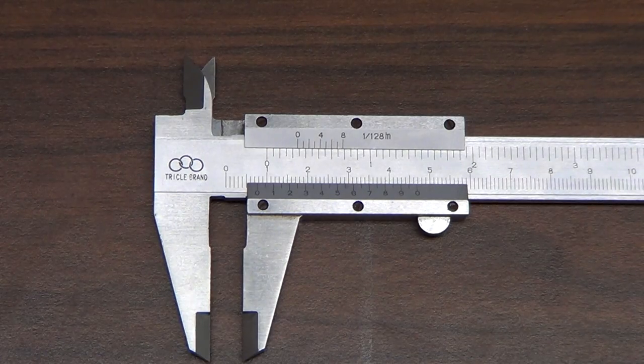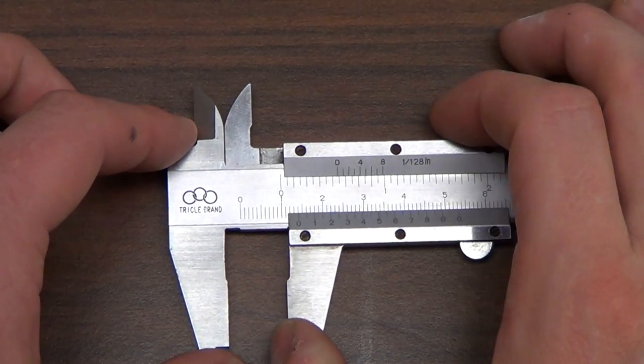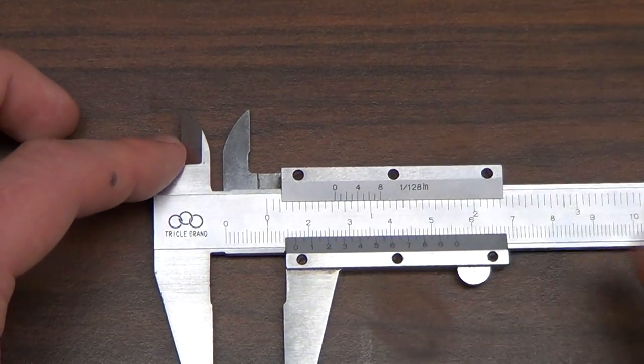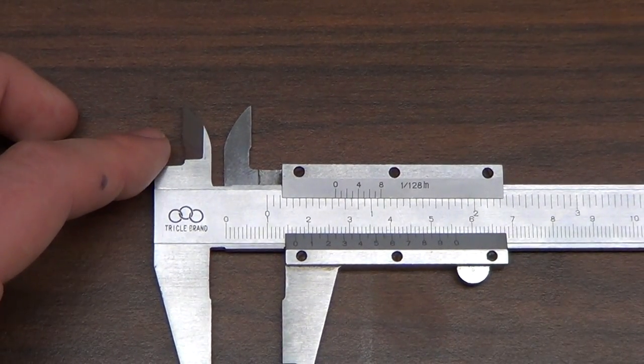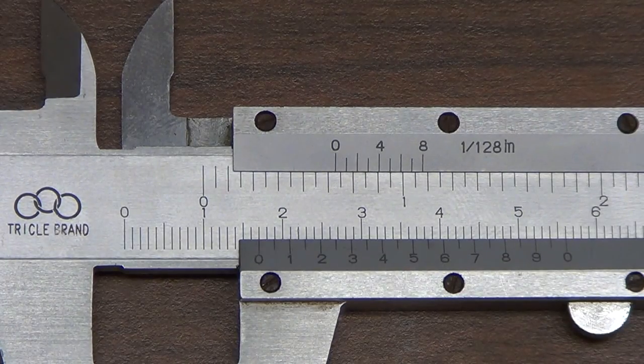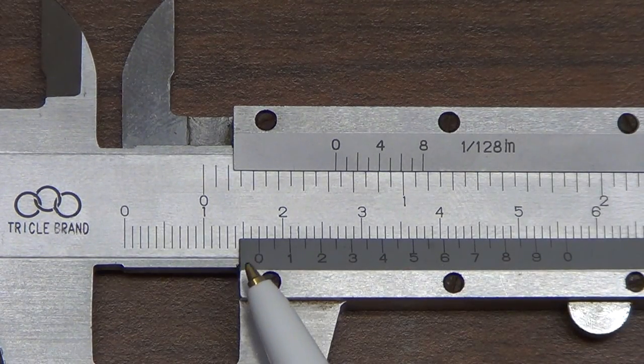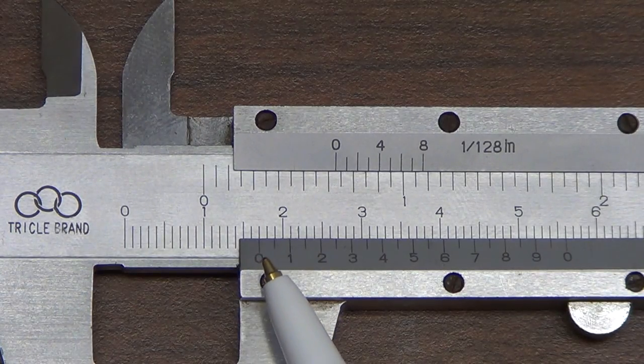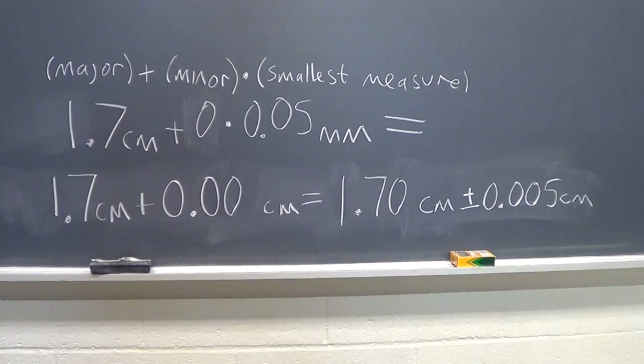Now as an example of what happens if our scale is slightly different, if we're using a different measure, and we come upon the case where the zero on the minor scale lines up with an increment on the major scale. For instance, now I see that the zero on the minor scale lines up very well with 1.7 on the major scale. What that does for our calculation is we still have a major scale of 1.7 centimeters, but now our minor measurement is zero increments, and we multiply that times our smallest measure of 0.05 millimeters, and what we get back is a more precise measure of 1.70 plus or minus 0.005 centimeters.